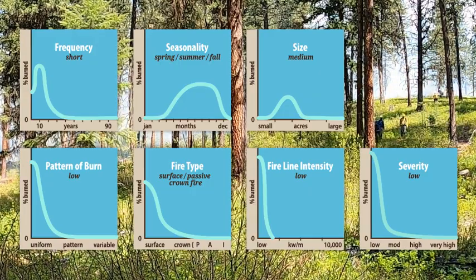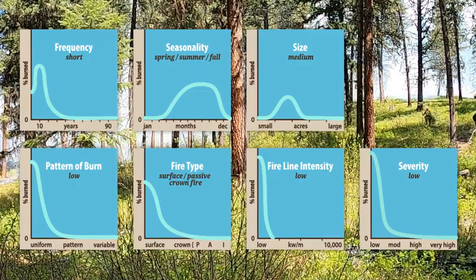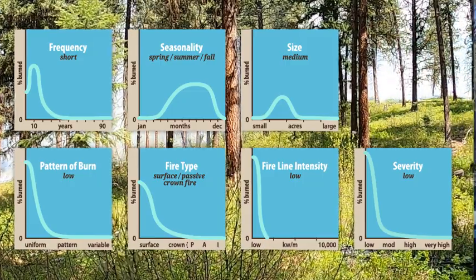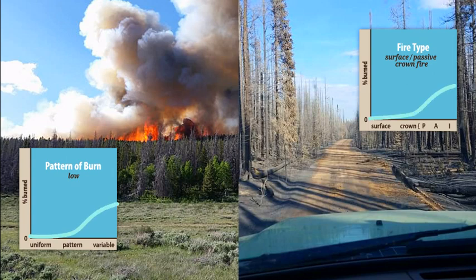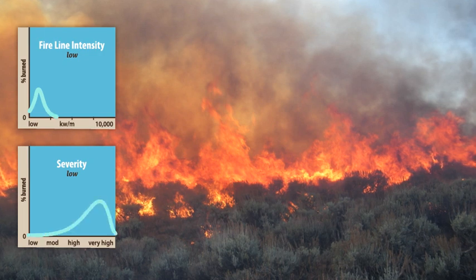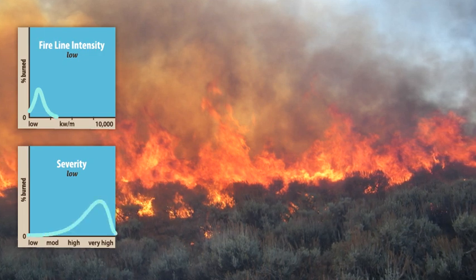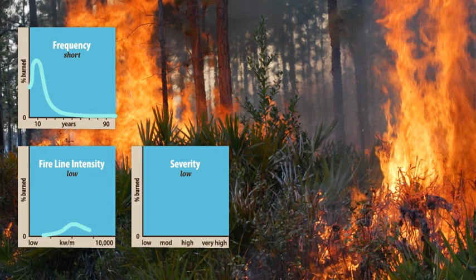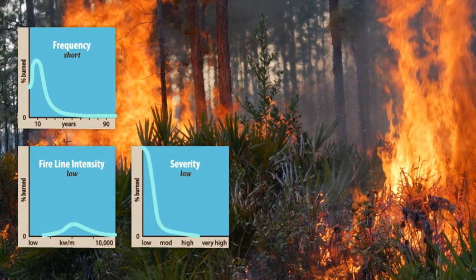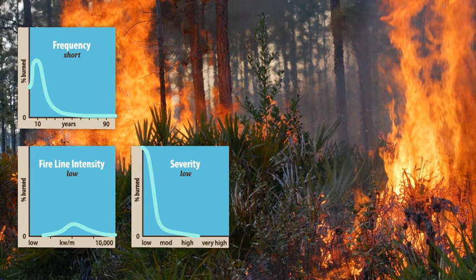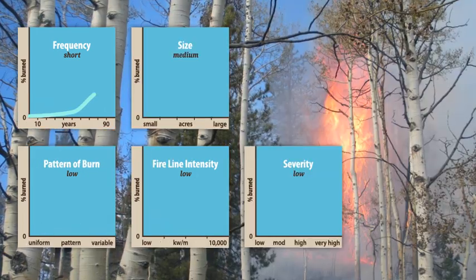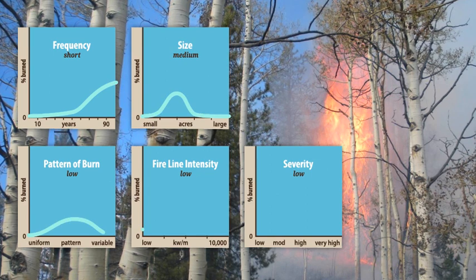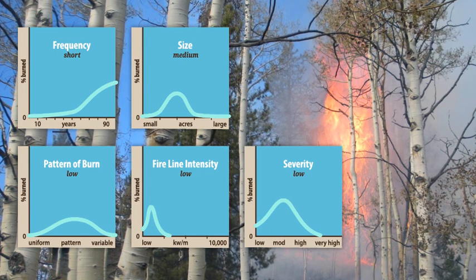Let's take a quick tour through some other vegetation types and get a snapshot of how these attributes can play out. Historically, lodgepole pine forests often had infrequent crown fires that killed the majority of trees, making way for the next generation. Sagebrush has medium fire intensity and high fire severity. Similar to ponderosa pine, southeastern forests have frequent fires and low severity but with high intensities. And some areas, like the mixed conifer forests of the northwestern United States, are about right in the middle for most fire regime attributes.